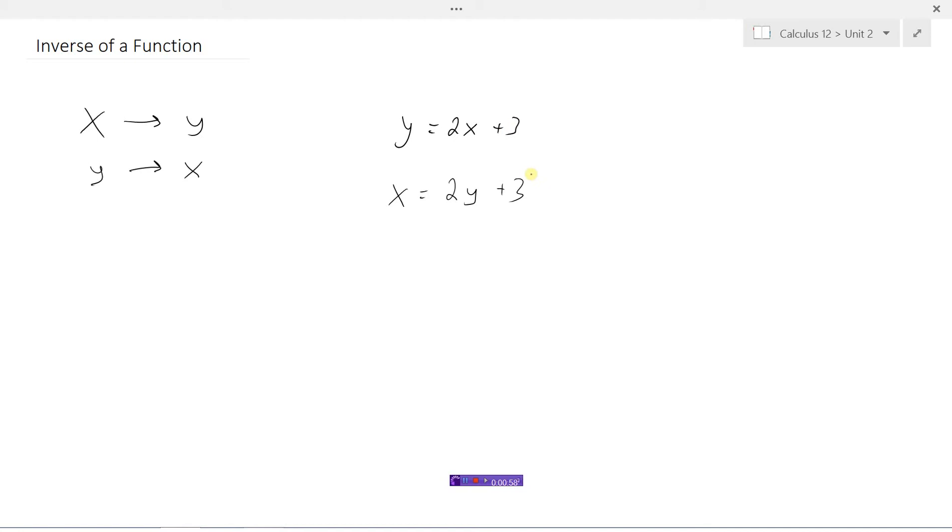Usually what we would then do is isolate y. So I'm going to minus 3 from both sides here. x minus 3 equals 2y, and then we'll divide by 2. I could write it like this: y is equal to x minus 3 over 2. So this function up here and this function down here are inverses of each other.